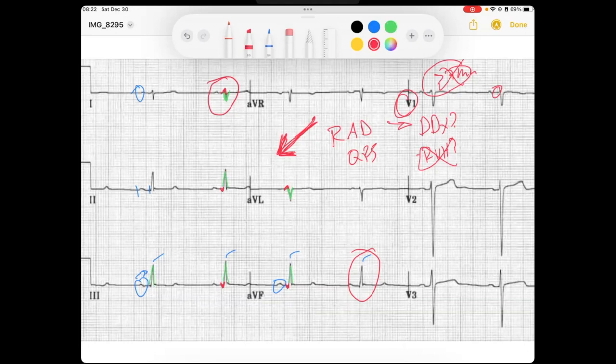And so because we've ruled out other causes of right axis deviation, and this fits the morphology that we would expect, we can say that this is a left posterior fascicular block.